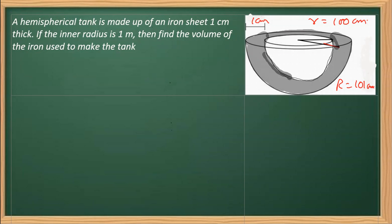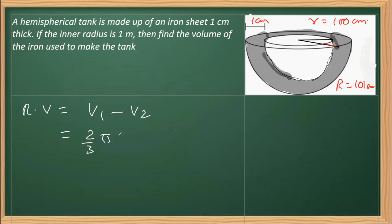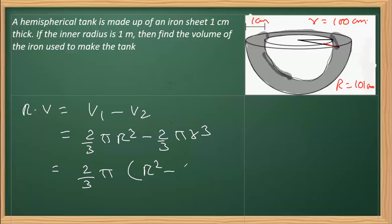The required volume of the material will be V1 (outside volume) minus V2 (inside volume). Since it is a hemisphere, its volume is (2/3)πR³ minus (2/3)πr³. We can take the common factor (2/3)π out, giving us (2/3)π times (R³ minus r³).